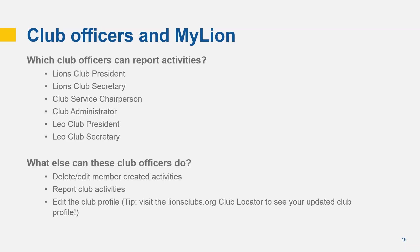Any club member can create a Lion account and use MyLion. However, only the club officers shown here can report an activity. There are several other unique permissions these officers have on MyLion: they can delete a member-created activity, edit a member-created activity, and create a club profile on the MyLion application. The club profile is a great opportunity to share more about your club with other Lions, as well as community members who might be interested in joining your club. Club profiles on MyLion are displayed on the club locator on LionsClubs.org. If you download the app, choose a fun picture that represents your members, and share a description about what makes your club special, you can then visit the club locator on LionsClubs.org, search for your club, and see how your club is showcased to potential members.